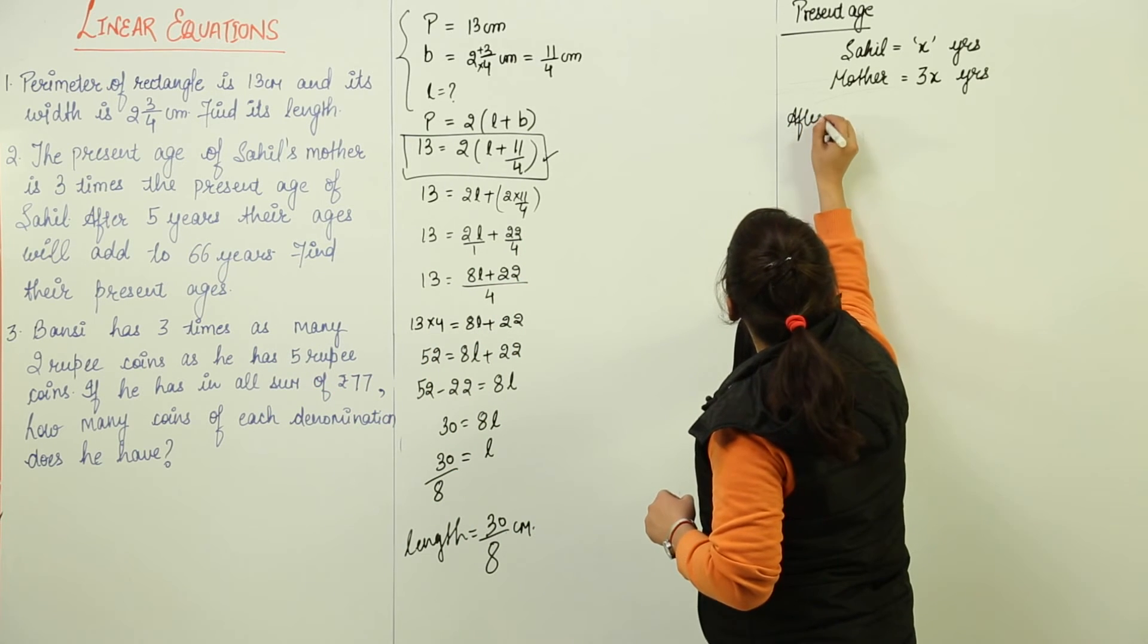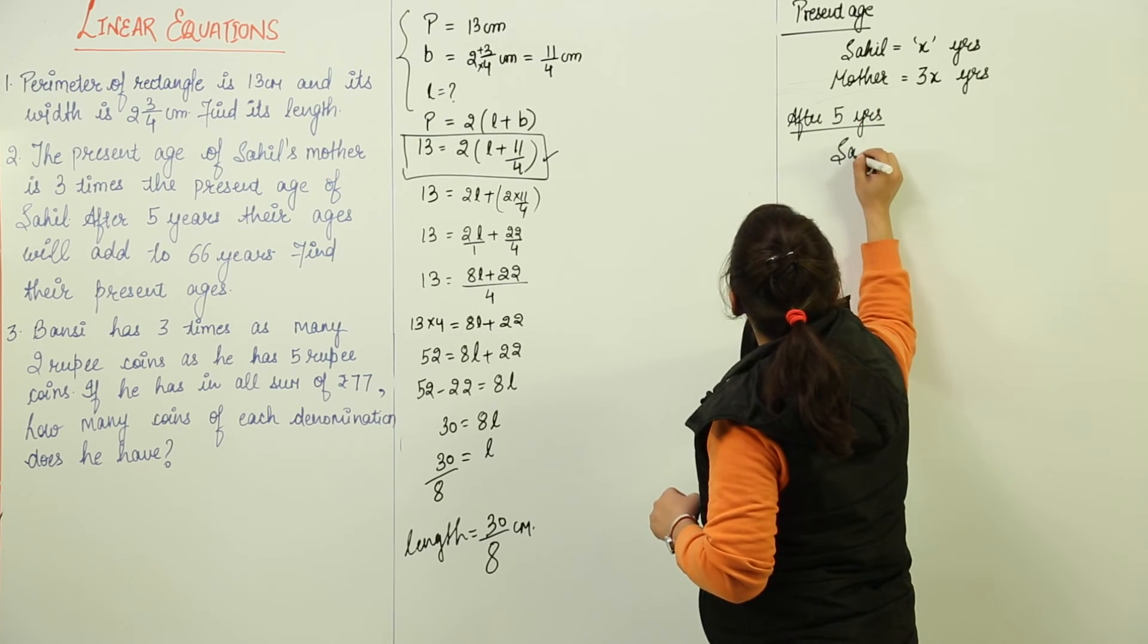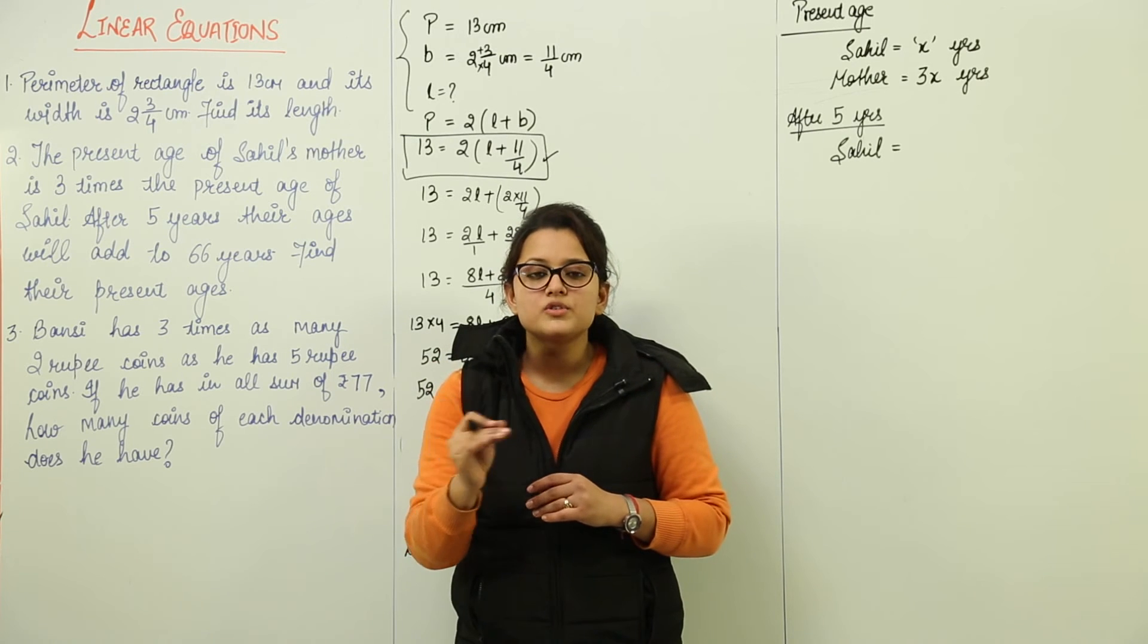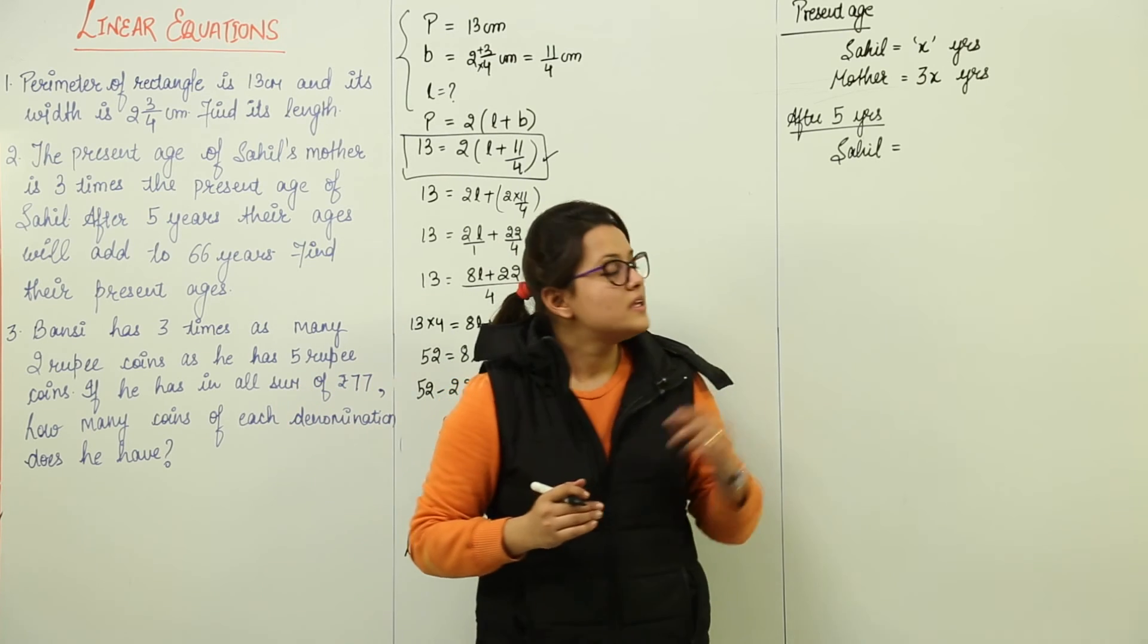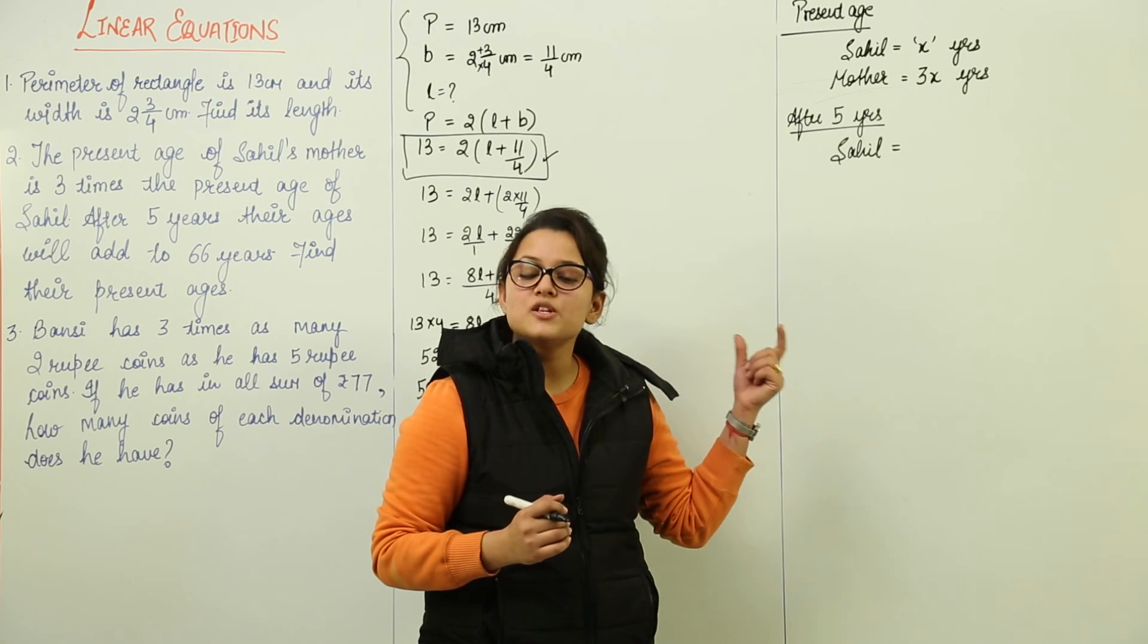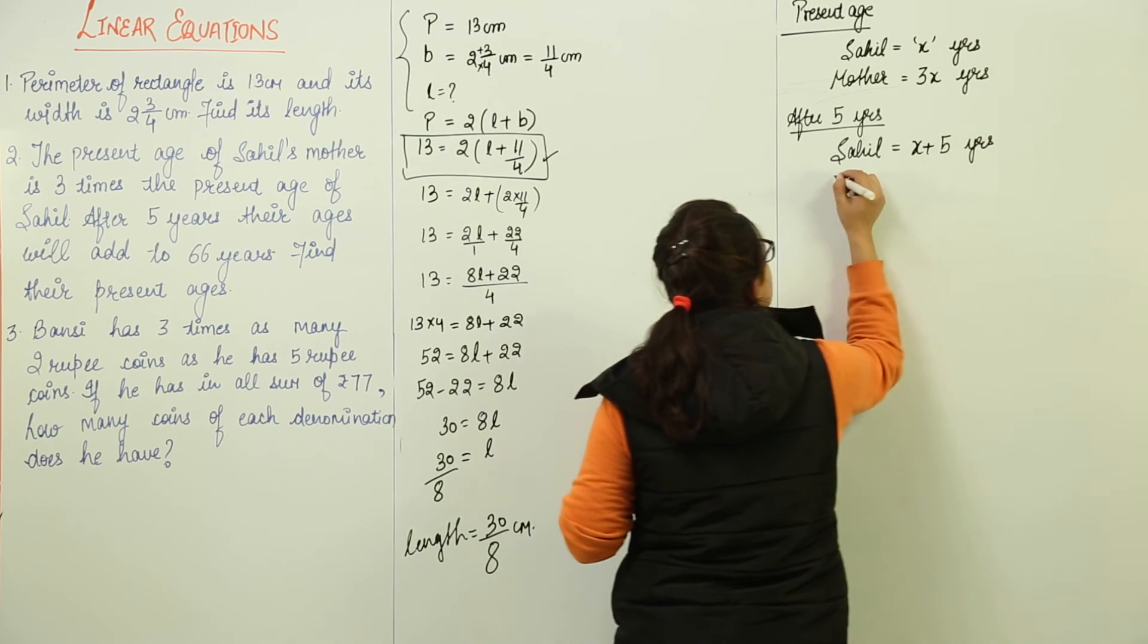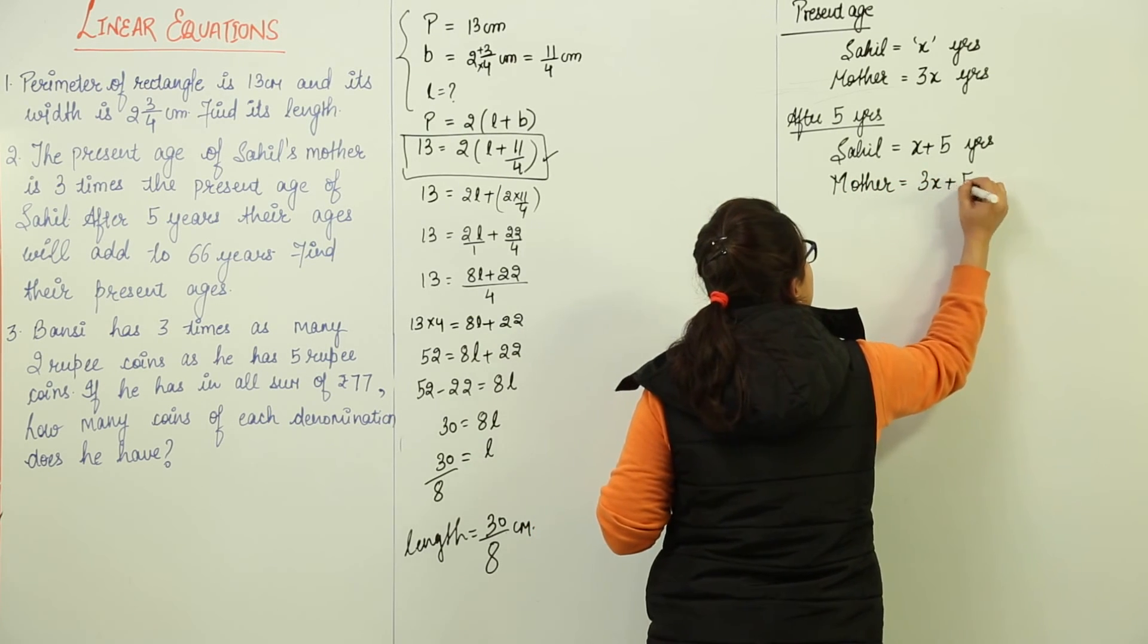The next part says after 5 years. If you are 15 years old, after 5 years, what will be your age? It's 15 plus 5, that is 20. Similarly, if Sahil is X years old today, in present, what would his age be after 5 years? It would be X plus 5. Similarly, what will be his mother's age after 5 years? Her age would be 3X plus 5 years.